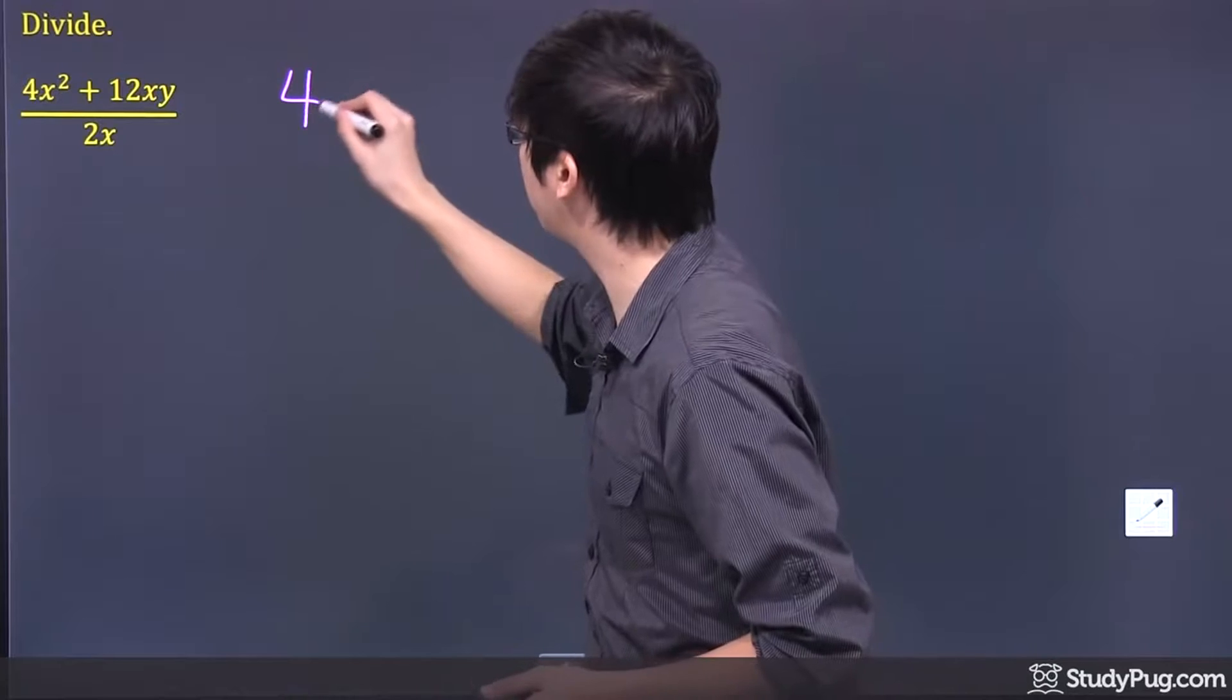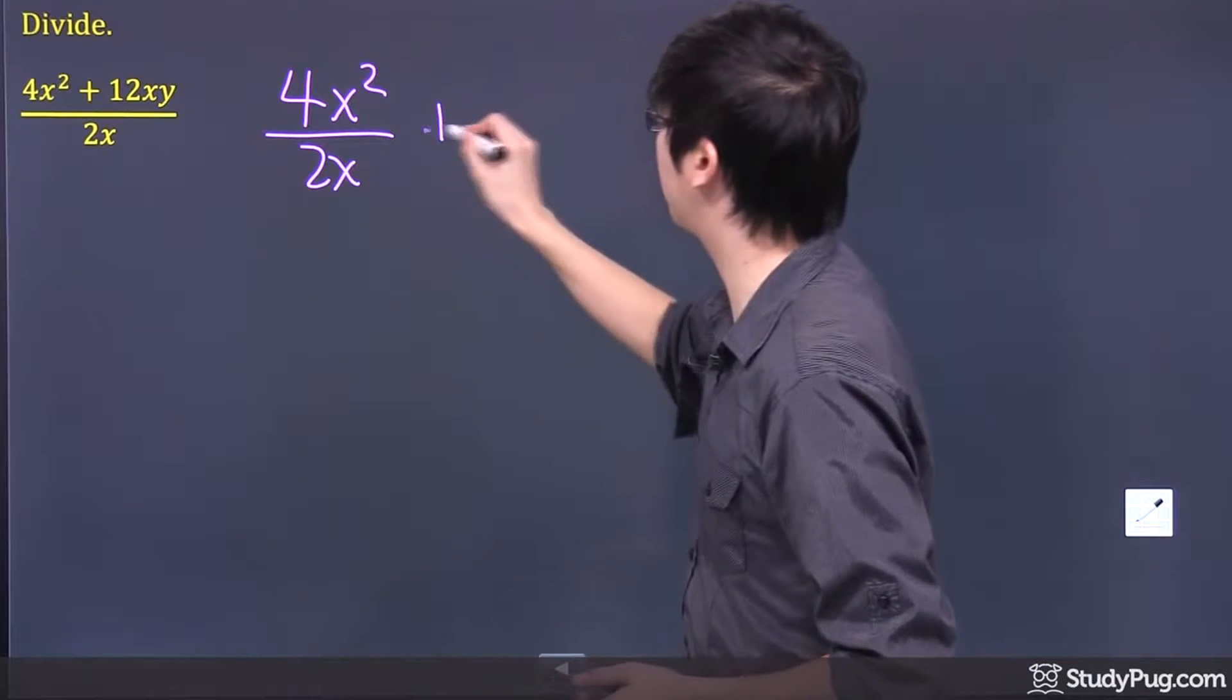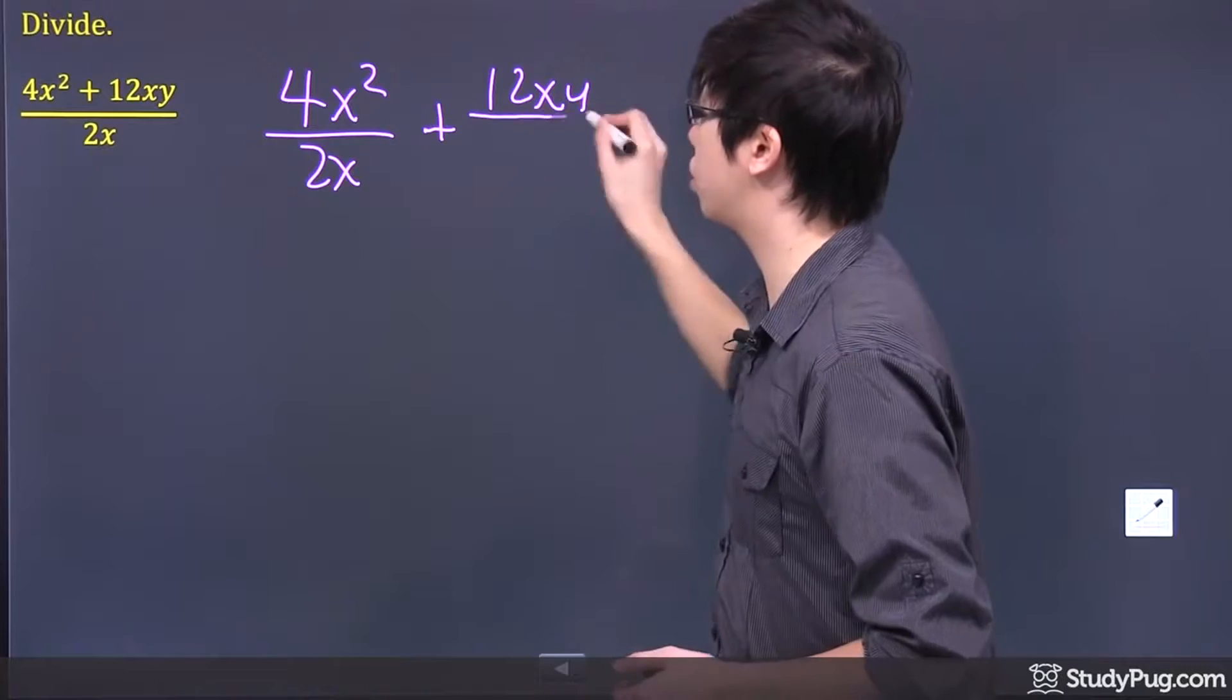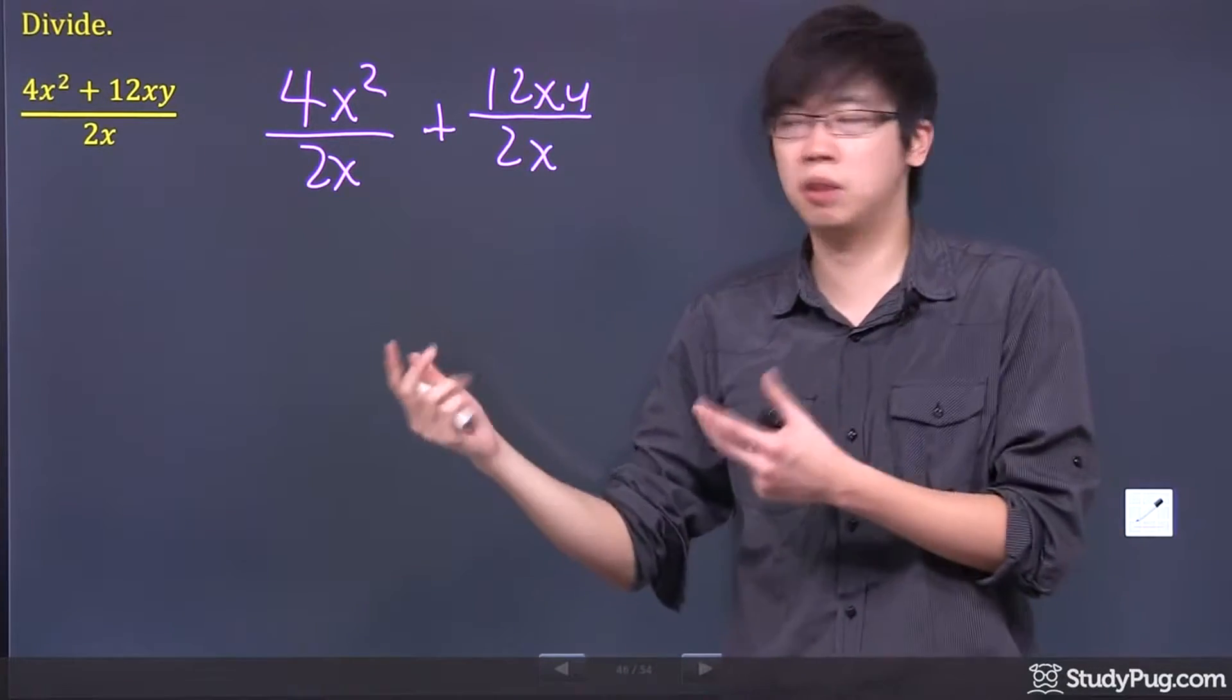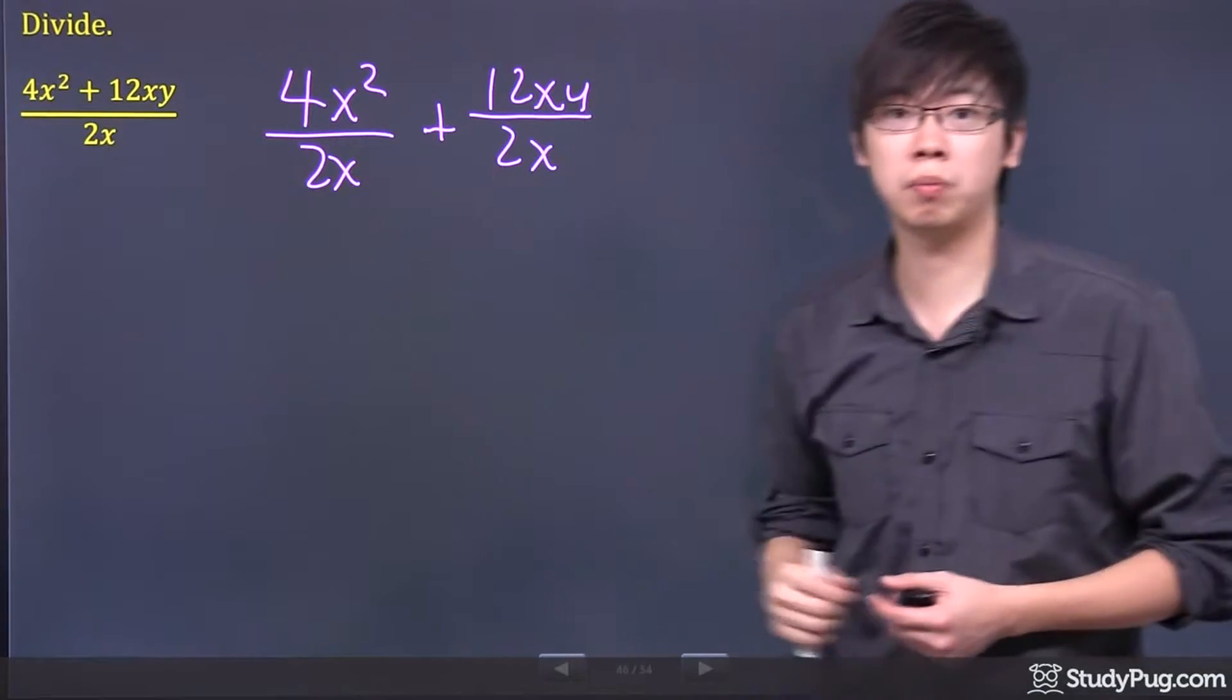sometimes it's probably better if you just separate them. So I didn't change the question. I simply just give the 2x back to their own position.